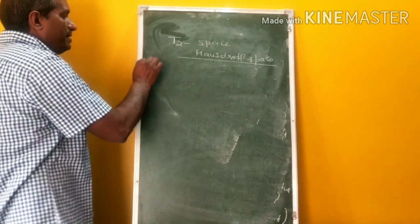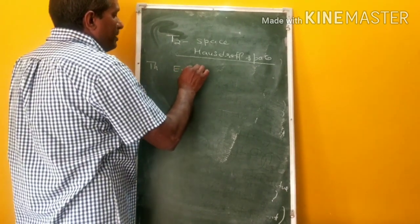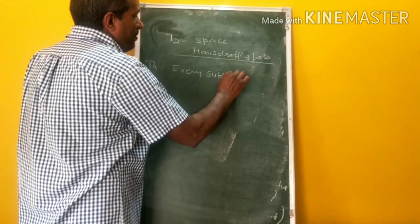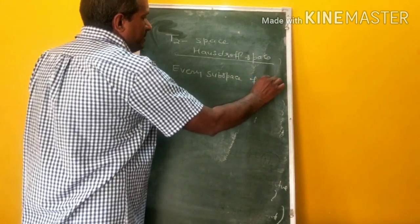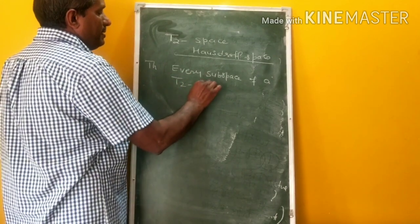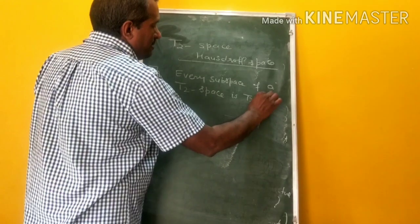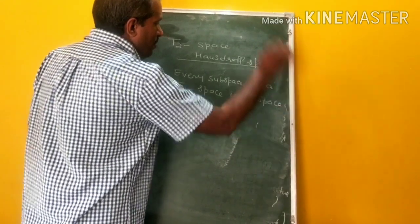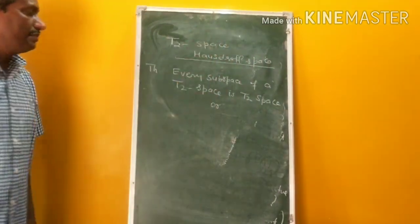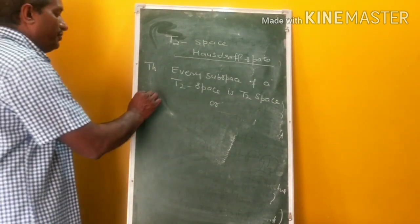Every subspace of a T2 space is T2. That is, the heredity property holds in T2 space.